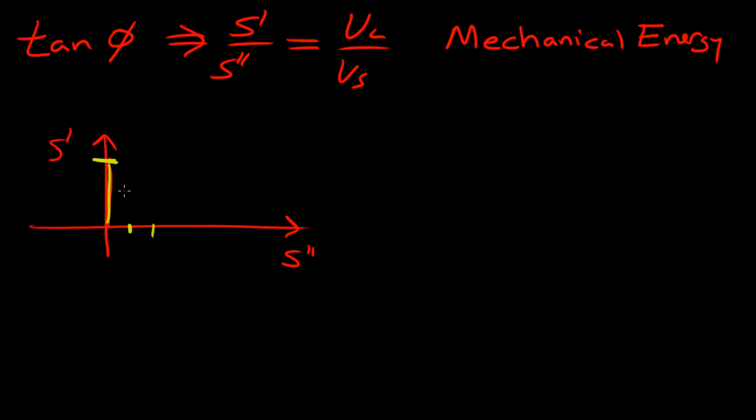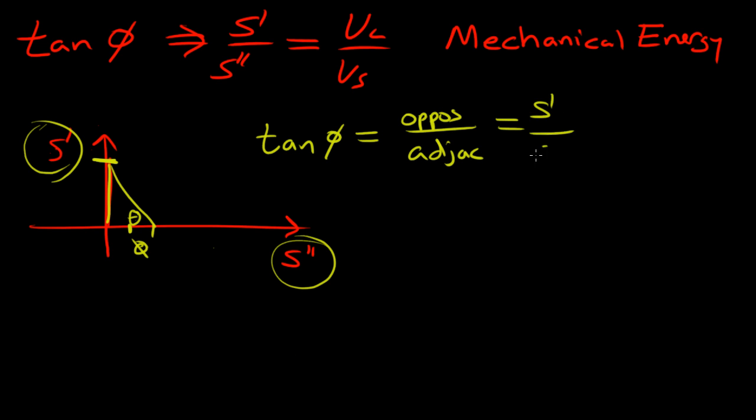But just to make it more clear, we'll draw that. The real portion is bigger than the lost portion. And then what we're going to do is define the loss tangent, which is going to be here. Or in our case, we're going to call it phi. So the tangent of this phi is the opposite, which means it's S prime over S double prime.